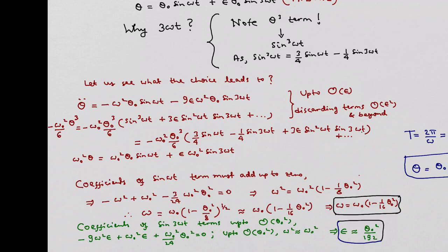So once we collect all the terms corresponding to θ̈, θ³ term and the θ term, we can now look at coefficients of the sin ωt term. In order for the differential equation to be satisfied, that is left hand side is same as right hand side which is 0, we must have the coefficient of sin ωt term adding up to 0.